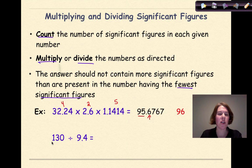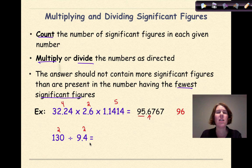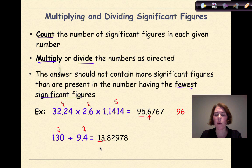Let's look at another situation: 130 divided by 9.4. The 130 does not have a decimal point, so it has two significant figures. 9.4 also has two significant figures, so our final answer will contain two significant figures. When I divide this out, I get 13.82978. I can only have two significant figures, so I keep the 13, look at the 8, round up, and my final answer is 14.